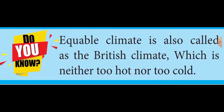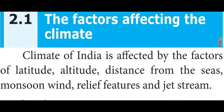The climate of India is affected by some factors. Today in this class, I am going to revise what are the factors affecting the climate of India. There are mainly six factors: the first one is latitude, second is altitude, third is distance from the seas, fourth is monsoon wind, fifth is relief features, and the last one is jet stream.